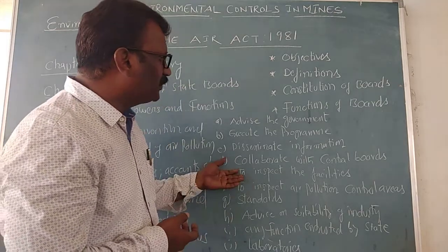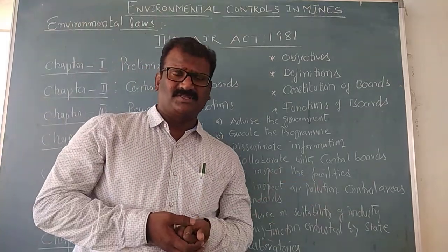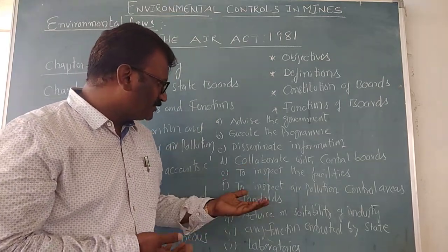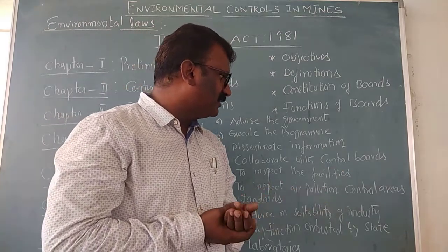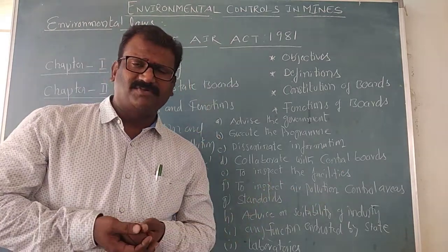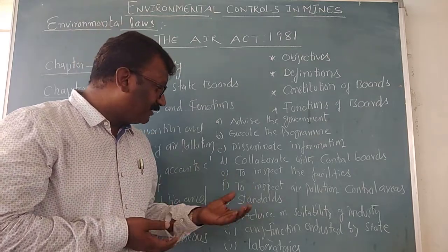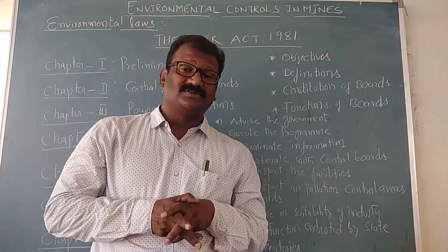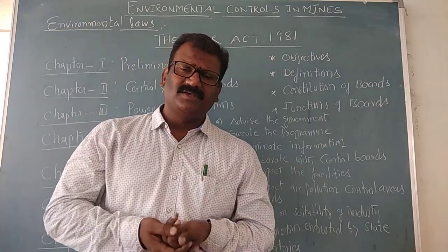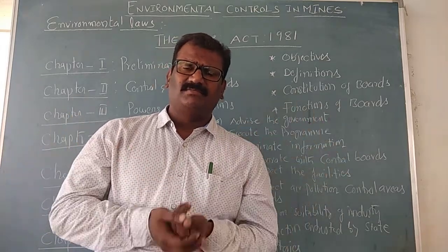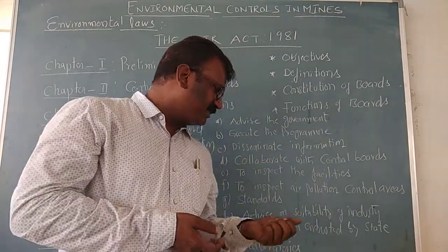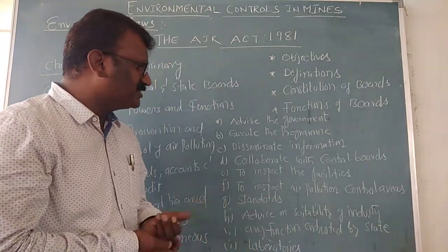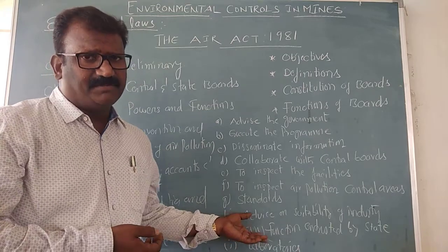Other functions include inspecting facilities — checking the various industries established in different types of areas — and inspecting air pollution control areas to ensure standards are maintained. Setting standards is also very important: air quality standards are set for different locations, for example, forest areas or endangered spaces. The boards also advise on suitable industries and execute functions entrusted by the state government.